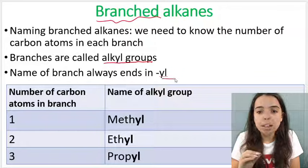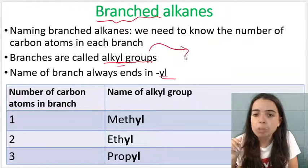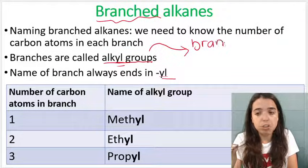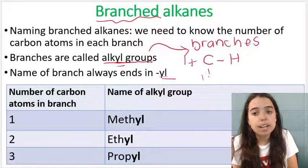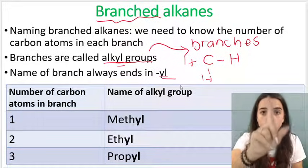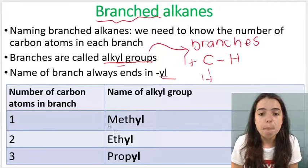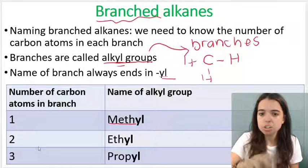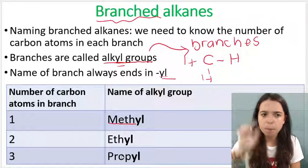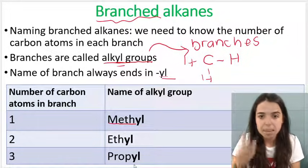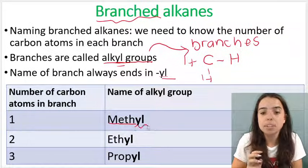The name of a branch will always end in YL because the word alkyl ends in YL. Alkyl groups are branches that contain carbons and hydrogens. If I have a branch with one carbon, it is a methyl branch. If I have two carbons in my branch, it's an ethyl branch. If I have three carbons in my branch, it's a propyl branch. Meth means one carbon, eth means two carbons, and prop means three carbons — but it ends in YL because it's a branch, it's an alkyl group.